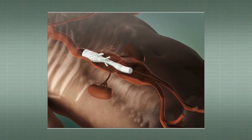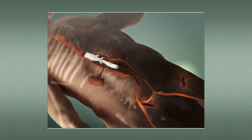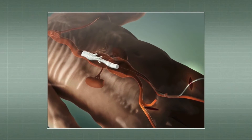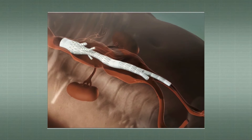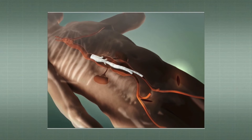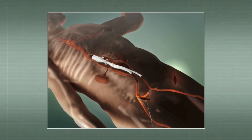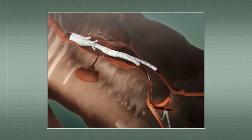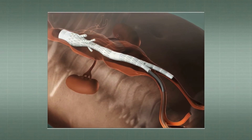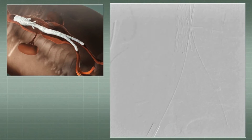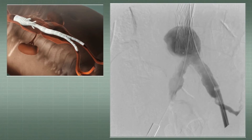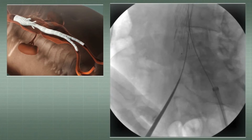The branch stent graft implant is in place. We proceed to the abdominal bifurcated stent graft following the regular instructions. In this case, we perform separate arteriograms to localize the aortic and the common iliac bifurcations.